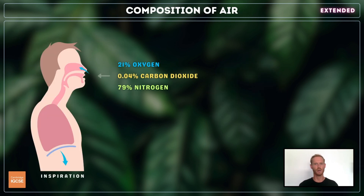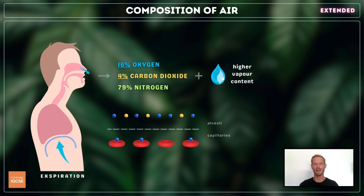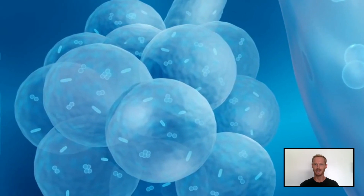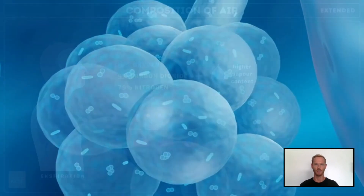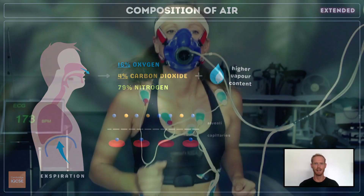The air we breathe in contains around 21% oxygen and 0.04% carbon dioxide. Some of the oxygen is absorbed into the bloodstream, while carbon dioxide produced by respiration diffuses into the alveoli. As a result, expired air contains less oxygen and significantly more carbon dioxide than atmospheric air. In addition, some of the moisture that lines the alveolar walls evaporates and saturates the air with water vapour, so expired air contains a lot more water vapour than inspired air.